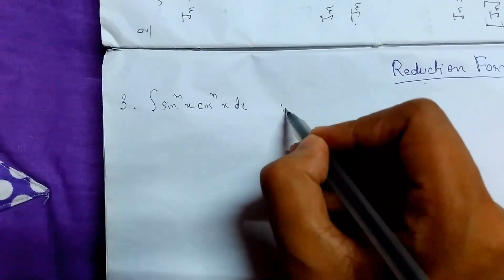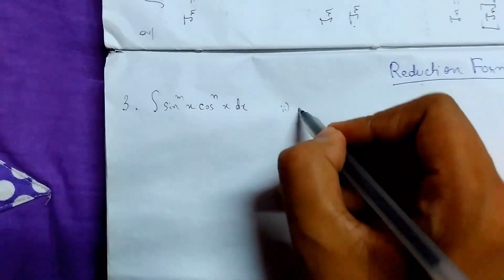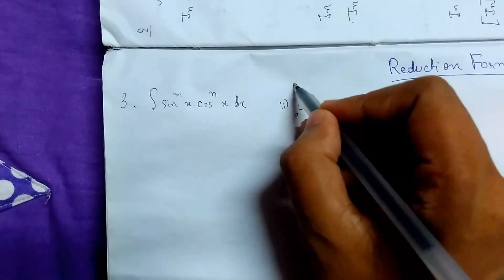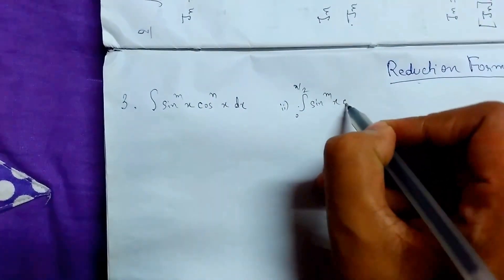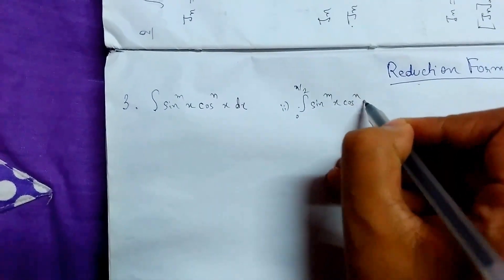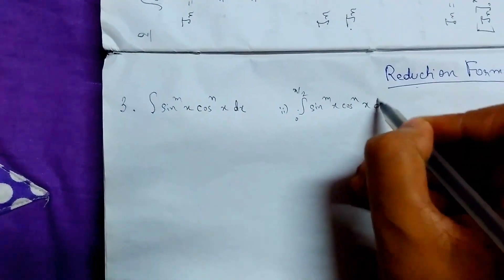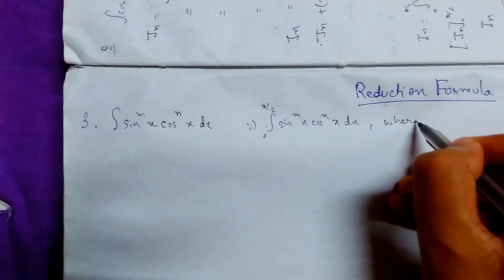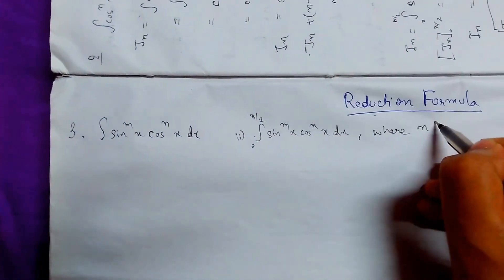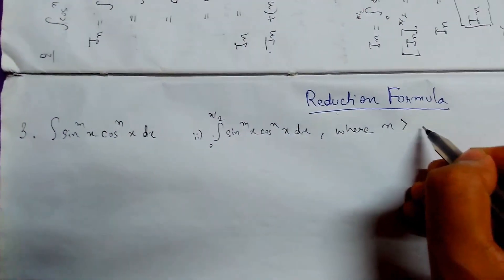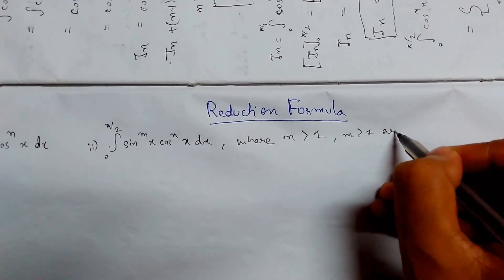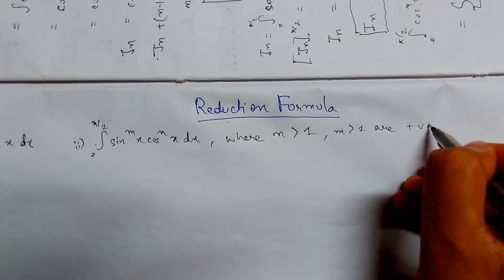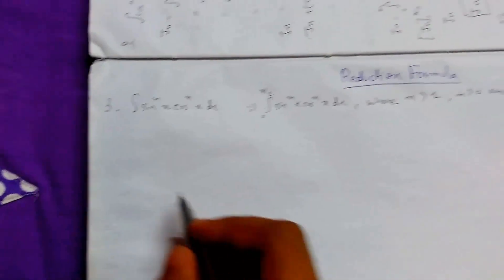This will be our first part, and the second part will be the integration from 0 to π/2 of the same expression. Here m and n are greater than 1 and both are positive integers. So this was our statement.